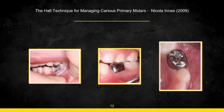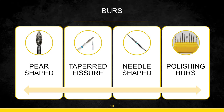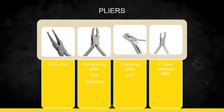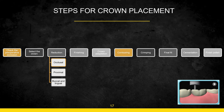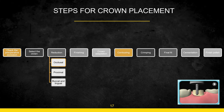For the conventional method, the armamentarium includes: burrs — pear-shaped, tapered fissure, needle-shaped, and polishing burrs; pliers — hoe plier, contouring plier (114 Johnson plier), crimping plier (417 plier), and crown removal pliers; also a micro motor with straight handpiece, green stone burr, divider, and metal ruler. The procedural steps are: check pre-operative occlusion, crown selection, reduction, finishing, adaptation, contouring, crimping, final fitting, cementation, and finishing and polishing.